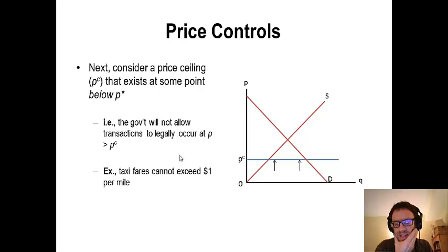An example of price ceilings that we have in the city of Chicago, like a lot of American cities, is on cab fares. So cabbies cannot legally set their fares at any price they want. They have to set their fares within the limits as dictated by the city of Chicago.